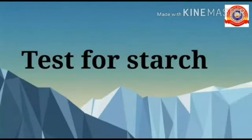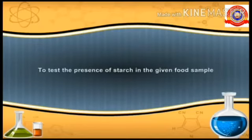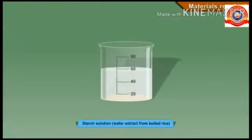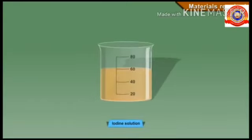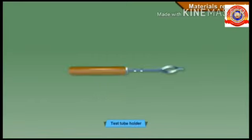The aim of the experiment is to test the presence of starch in the given food sample. Materials required: a test tube, starch solution — here we take rice gruel — diluted iodine solution, a dropper, and a test tube holder.